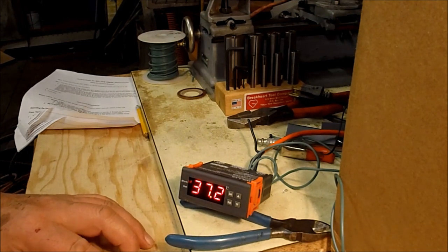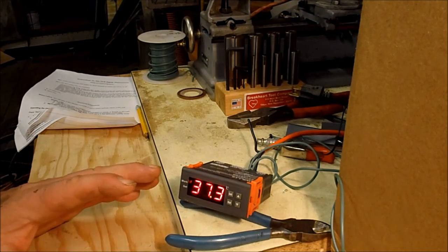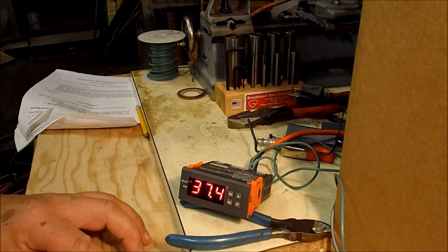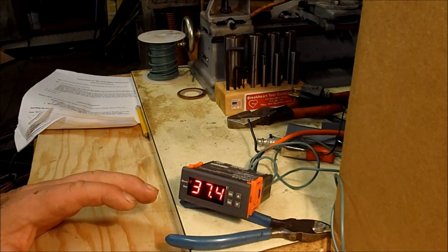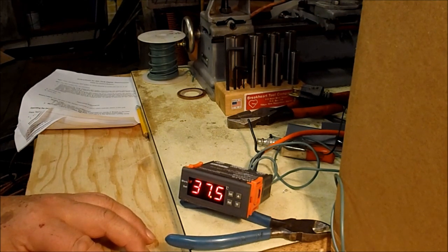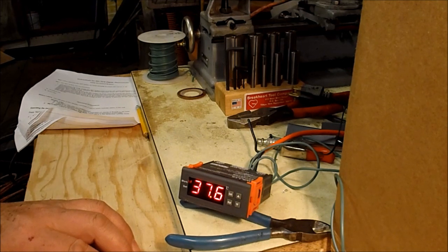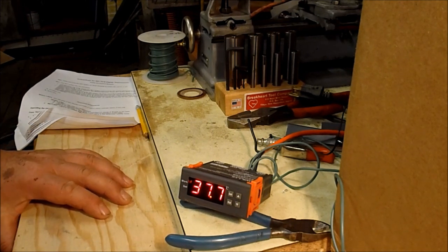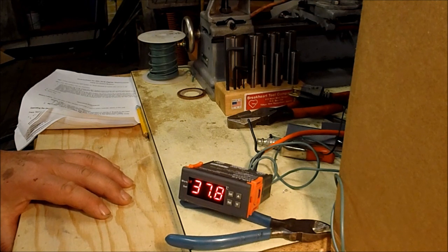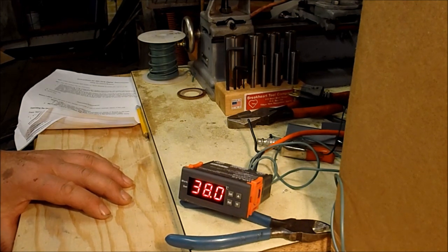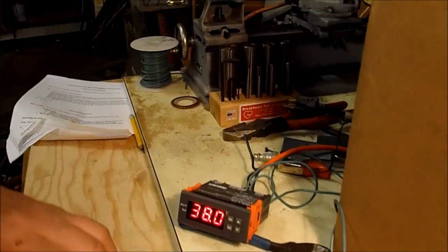Then the temperature will decrease down to 37 degrees, and then the switch will click and that will close the circuit and the light will come back on. Same thing if you were using a heater, same thing if you're using an air conditioner or a refrigerator. Okay, there was an audible click at 38 degrees and the light is shut off.